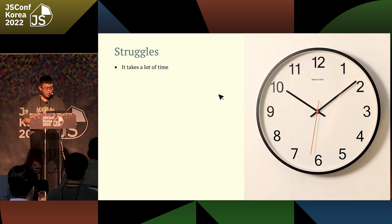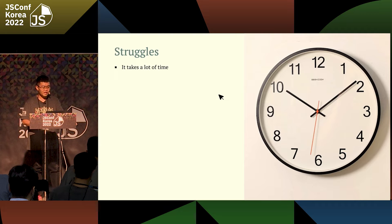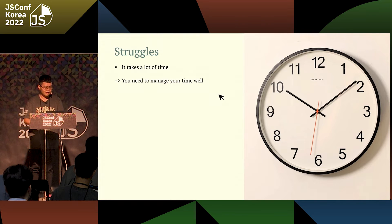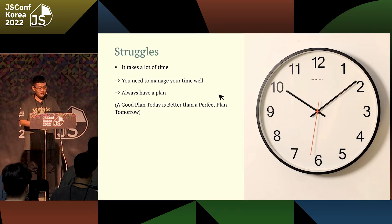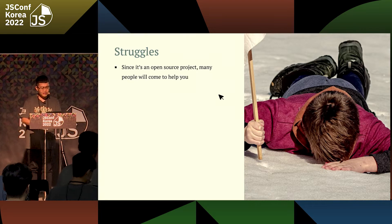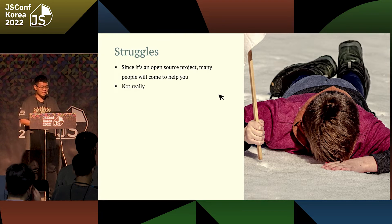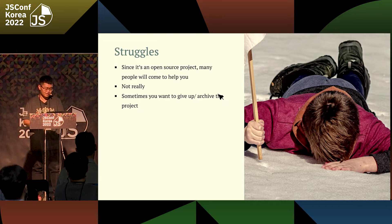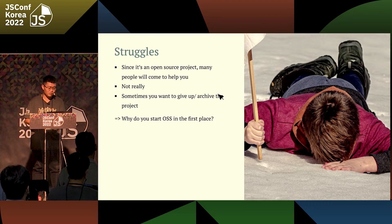The next struggle is that it takes a lot of time. When you build an open source project, there's often no existing solution, so you're the one trying to resolve it. When you have a full-time job and return from work, you don't want to spend more time on open source. And sometimes you just want to give up — but whenever you reach that state, remember why you started the project in the first place.